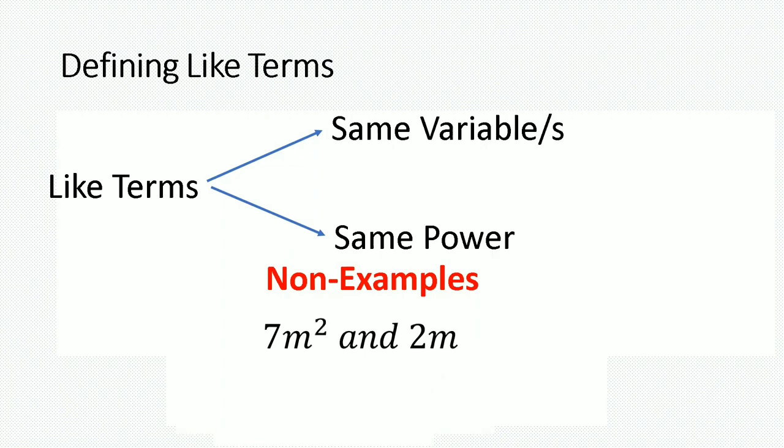Take this example: if I had 7m squared and 2m, we can see that they have the same variable m, but they are written to different powers. And because of that, we can see these two terms are not alike. m squared is not equal to m.